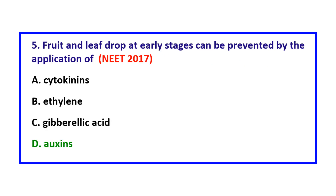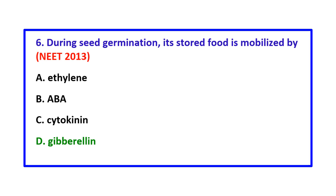Question 5: Fruit and leaf drop at early stages can be prevented by the application of auxins. Question 6: During seed germination, its stored food is mobilized by gibberellin.